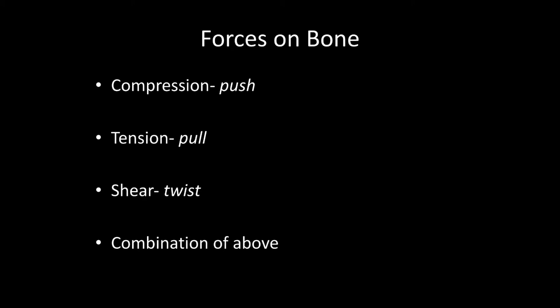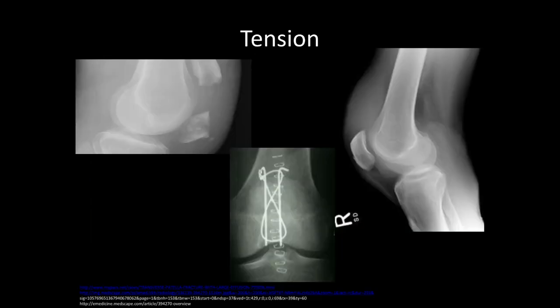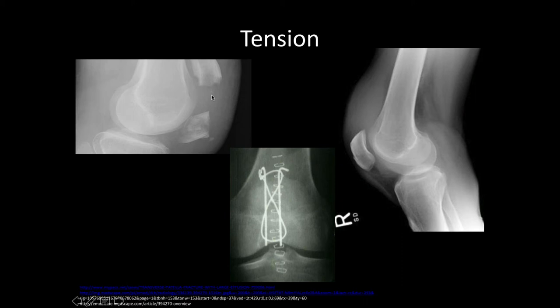Forces on bone: depending on the force, the bone will do different things. A good example is the ankle — you can tell what type of motion, what type of force caused the different sites of fracture. The three major ones are compression (a pushing force), tension (a pulling force), and shear (a twist force). Here's a compression fracture of the spine, probably at the thoracolumbar junction — a very common area for an anterior wedge compression fracture. With a pushing force, you get trabecular impaction and increased density. With a pulling force, the opposite is true — it's a transverse fracture with a different type of look.